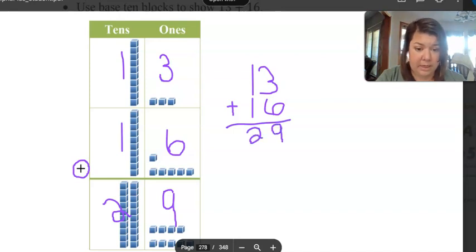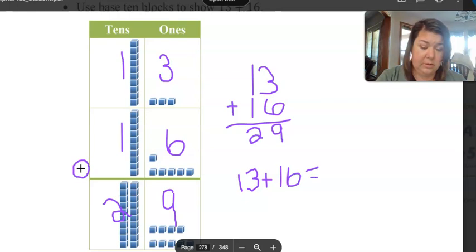So our number sentence is thirteen plus sixteen is twenty-nine. Or we can write it like this, like a sentence: thirteen plus sixteen equals twenty-nine.